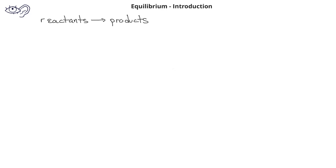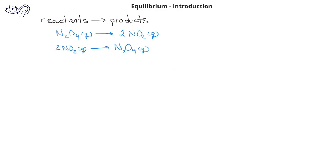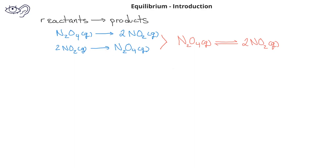For example, we might be familiar with one mole of N2O4 gas decomposing to form two moles of NO2 gas. However, the reverse reaction can also take place, so that two moles of NO2 gas can react to form one mole of N2O4 gas. Instead of writing two separate equations to talk about these forward and reverse reactions, we combine this into one chemical equation, and we change the arrow from a typical one-directional reaction arrow into a split two-directional equilibrium arrow.